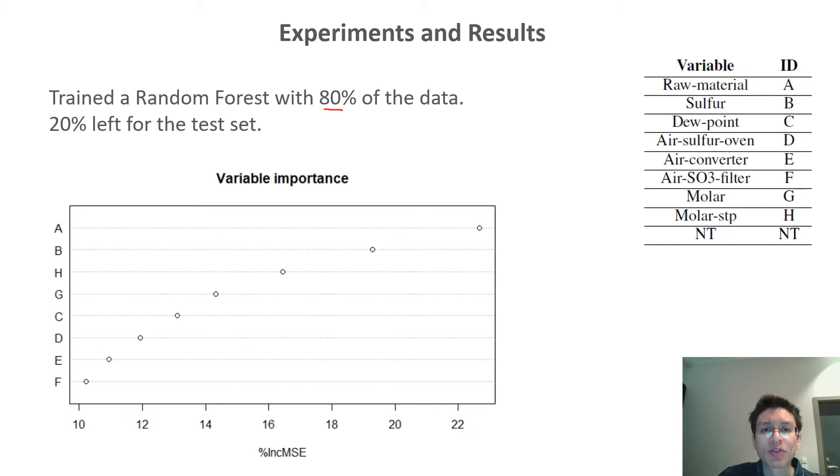For the experiments, we split the data into 80% for the training set, and we use the remaining 20% for the test sets. Then we trained a random forest regressor, and based on the out-of-bag error, we obtained this variable importance plot. The variables are sorted in descending order, starting with the most important one at the top. In this case, variable A.